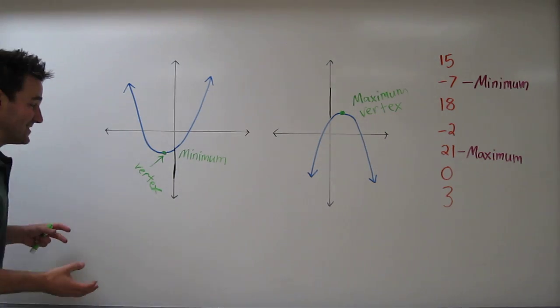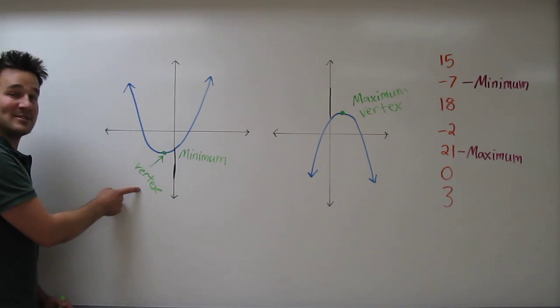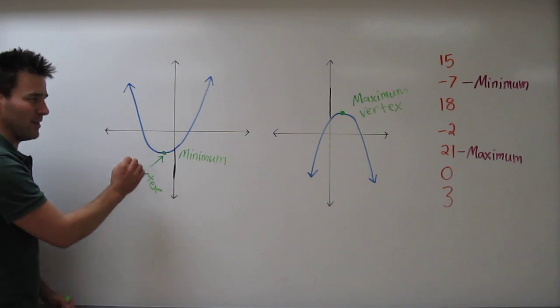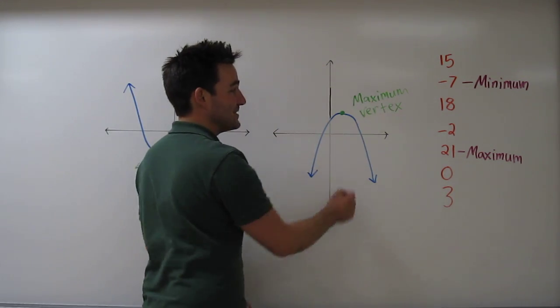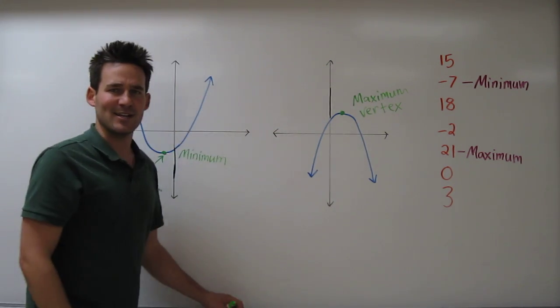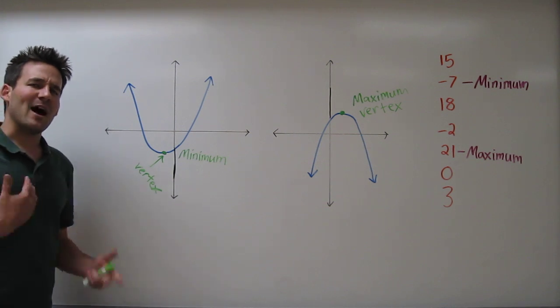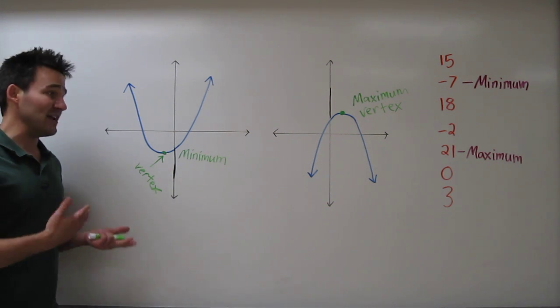What's interesting is that the minimum value was at the vertex on this parabola. And over here, the maximum value was on the vertex here. Now, I say minimum and maximum, and I'm saying value, too.